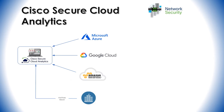Moving on to Cisco Secure Cloud Analytics. This can ingest data from your clouds such as Azure, AWS, and Google, and every conversation is seen from every device in the cloud. Cloud Analytics uses all of these conversations to understand what's normal, and it can inform you on anything suspicious or different about those conversations and alert you on abnormal behavior so you're able to respond to it. It's a similar solution but focused on the cloud.